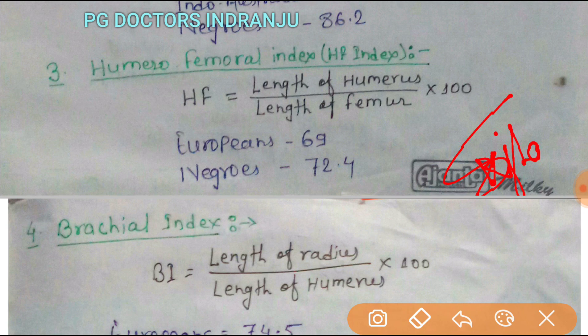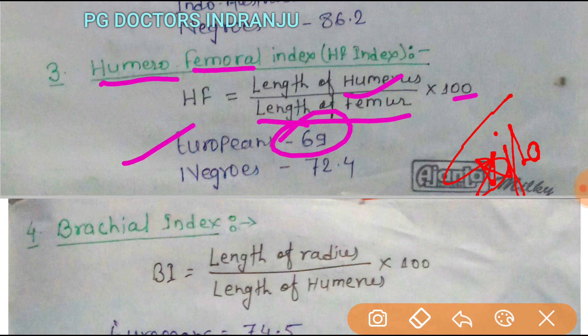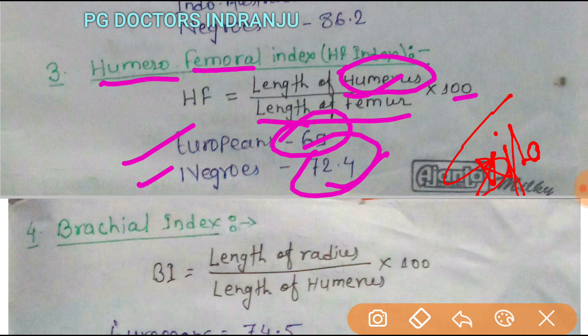Next is the humero-femoral index. The humero-femoral index equals the length of the humerus divided by the length of the femur, multiplied by 100. In Europeans it is 69, and in Negroes it is 72.4. The greater value in Negroes indicates that the humerus length is more — meaning the hand is longer relative to the femur.